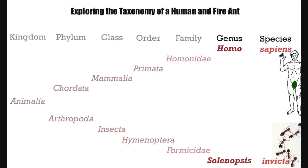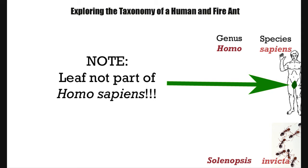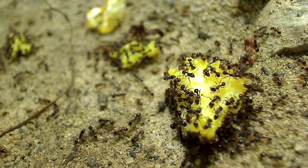When identifying or naming a species, we use the genus and species name. The scientific name of a human is Homo sapiens, and the scientific name of these fire ants is Solenopsis invicta. By the way, both the singular and plural form of the word 'species' is 'species' — there is one species, there are two species.